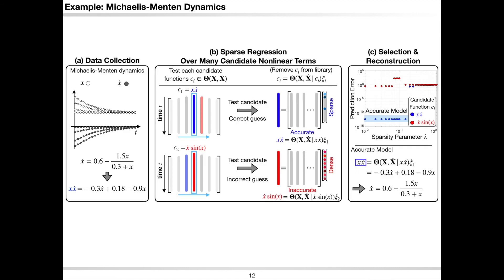As a simple example to further illustrate SINDy-Pi, let's look at the Michaelis-Menten dynamics. We could write this rational dynamics in implicit form and solve multiple sparse regression problems using SINDy-Pi. When we choose our left-hand side as x times x-dot, we get a sparse model after sparse regression. When we test the term x-dot times sin x, we end up with a dense model.